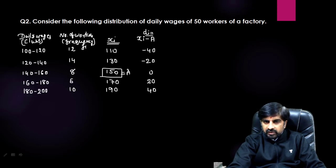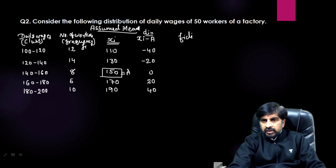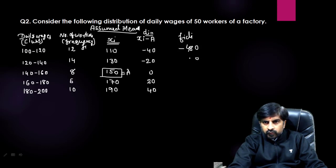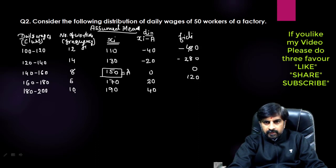Instead of multiplying fi×xi as in the direct method, here we multiply fi×di. This column is called fi×di, and this method is called the assumed mean method. Computing fi×di: for the first class, −40×2=−80; then −20×4=−80; then 0×... =0; then +20×4=+80; and +40×10=+400.